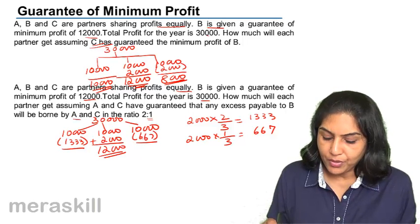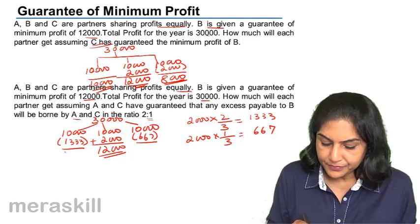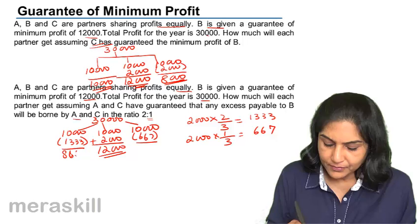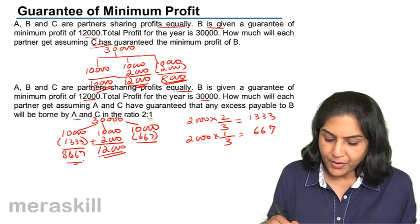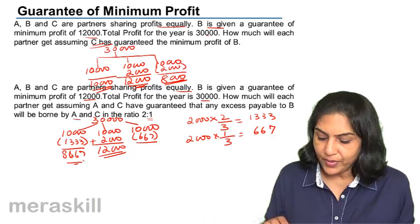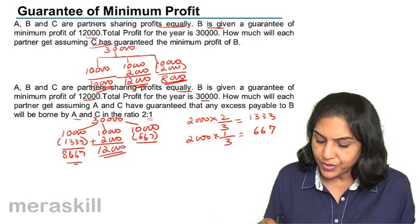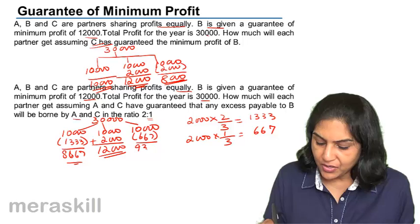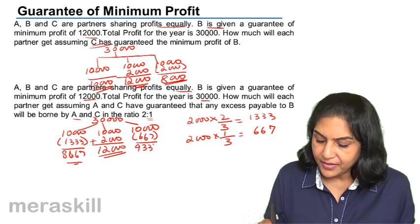Therefore, total profits would be A would get 8,667, B was guaranteed 12,000 and C would get 9,333.